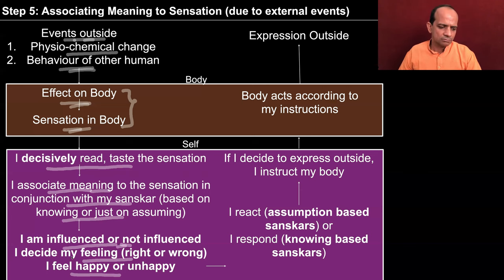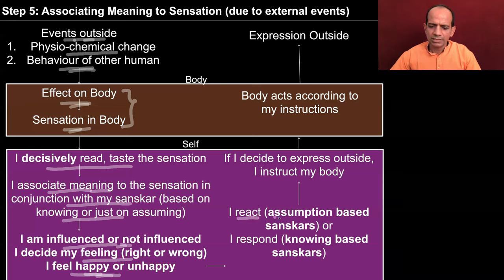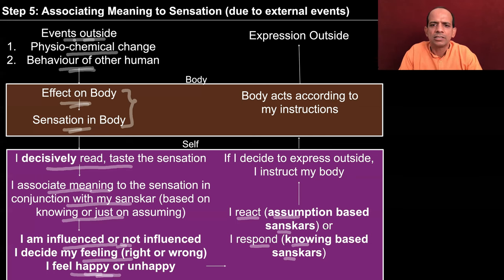Then you decide your feeling — whether you feel happy or unhappy. Earlier you might have been feeling happy, because you were considering the other person as a friend and had associated that meaning. Now you are associating the meaning of a conspirator, and you feel unhappy talking to the person. So you react when there is some assumption-based sanskar, and you respond when there is some knowing-based sanskar.